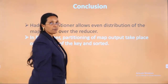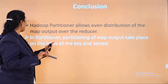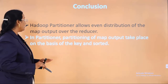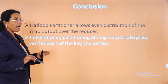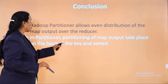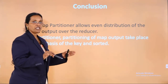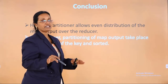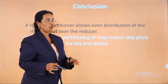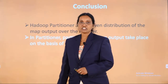To conclude: a partitioner allows even distribution of map output over the reducers. Partitioning of map output takes place on the basis of the key. Based on the key — for example, three keys defined — the outputs will be directed accordingly. This is the conclusion of partitioners.